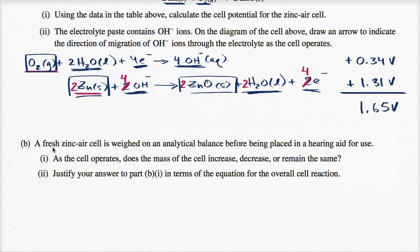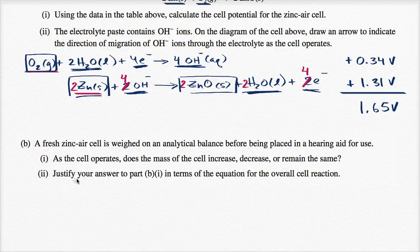All right, part B. A fresh zinc air cell is weighed on an analytical balance before being placed in a hearing aid for use. As the cell operates, does the mass of the cell increase, decrease, or remain the same?